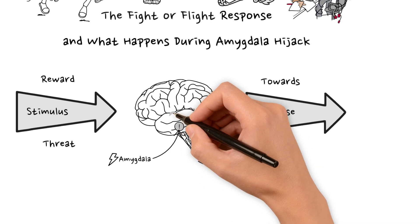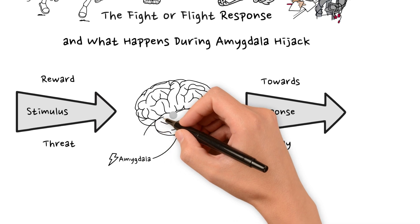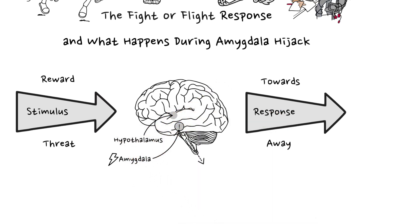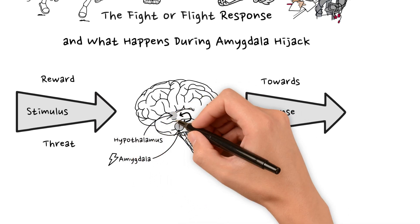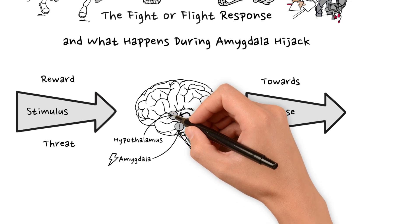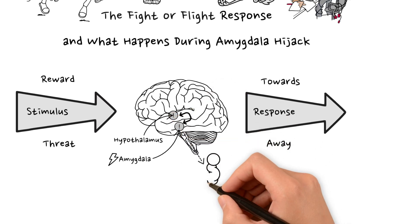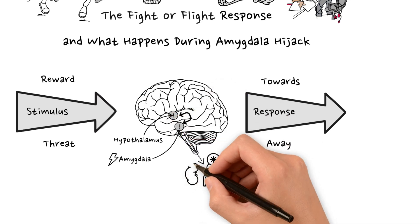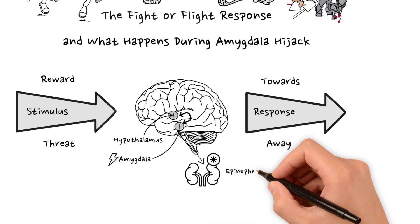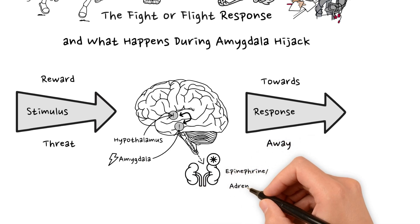Amygdala hijack happens when the amygdala interprets something as threatening, and then sends a signal to the hypothalamus, the brain's command centre. The hypothalamus then stimulates the sympathetic nervous system, which activates the adrenal glands, pumping epinephrine, also known as adrenaline, into the bloodstream.